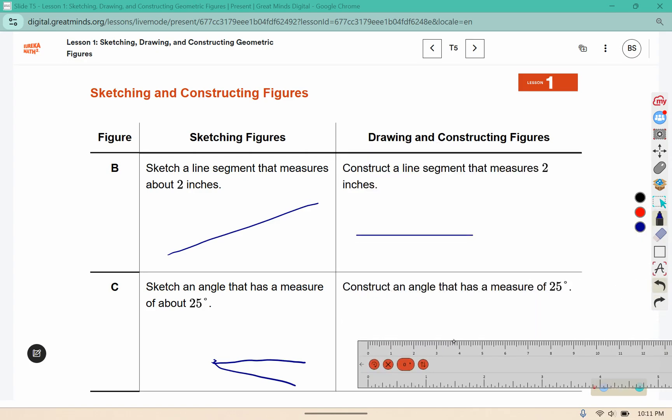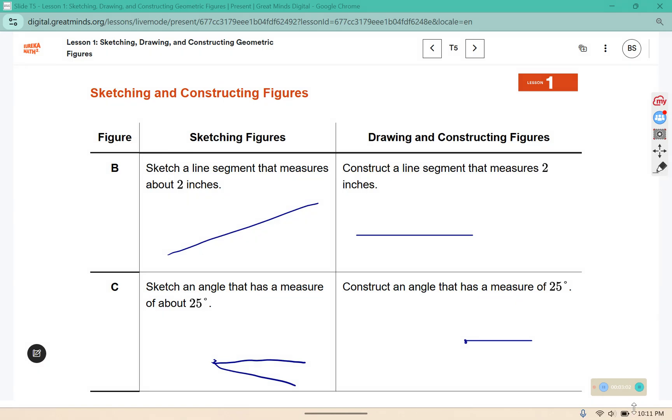For this one, we're going to start with a straight line, it does not matter how long, and then we're going to use our protractor to draw the mark for the 25 degree angle.